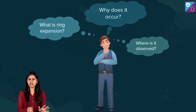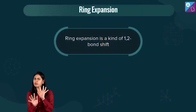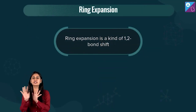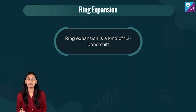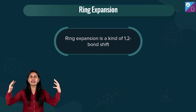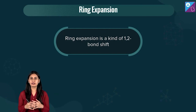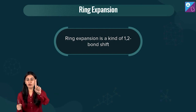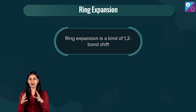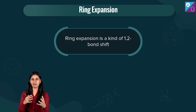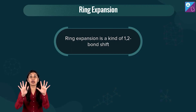What is ring expansion is a very simple thing — it's just a simple kind of shift happening. The ring is expanding, but how much? It can expand only by one carbon. So a 3-membered ring can become 4, a 4 can become 5, a 5 can become 6, and a 6 can become 7.